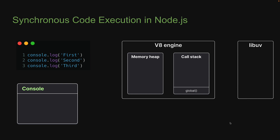Let's take a look at synchronous code execution. On the left, we have a simple code snippet — three console.log statements that log first, second, and third, one after the other. The main thread of execution always starts in the global scope, so the global function is pushed onto the stack.